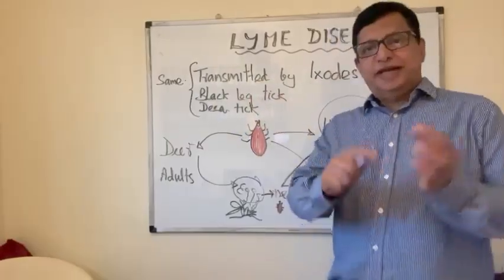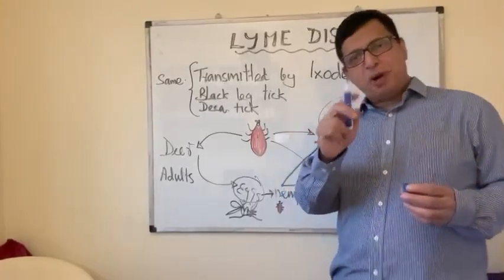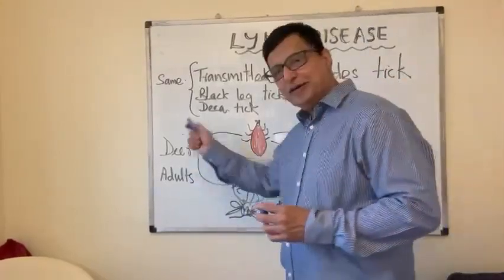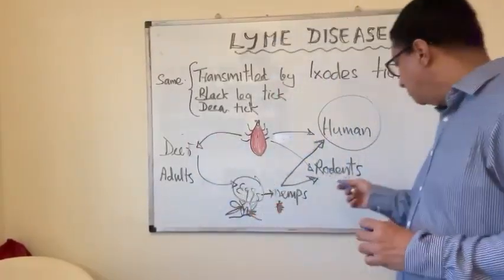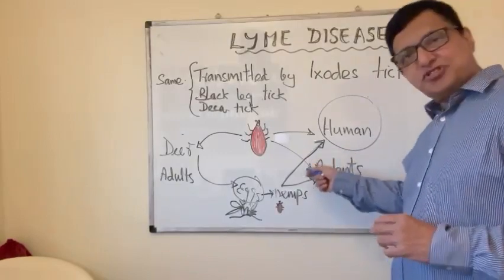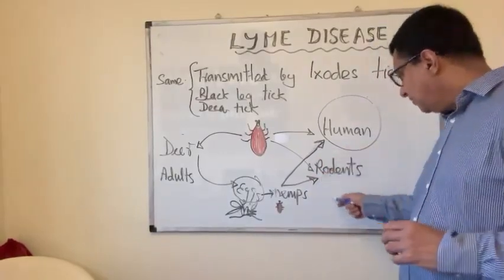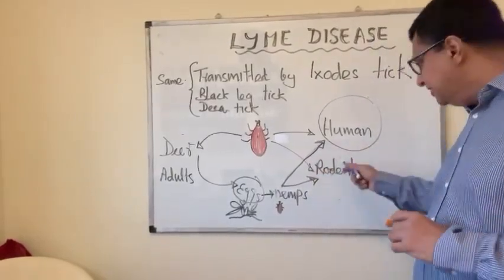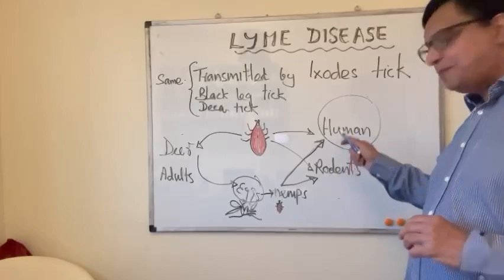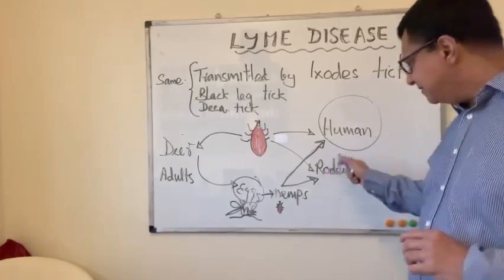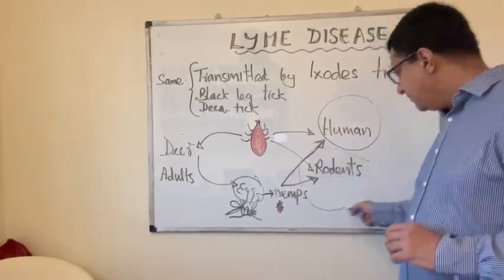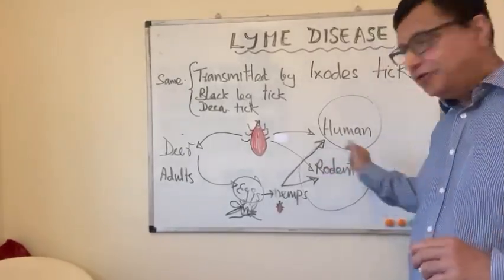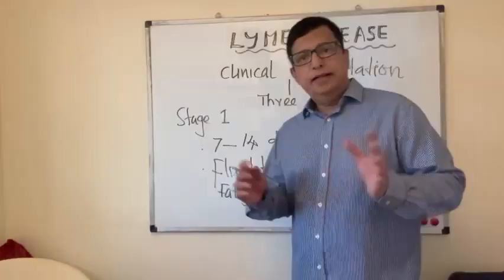The environmental host of these spirochetes is not the deer but the rodents, because spirochetes live in these rodents and they are the reservoir in the environment — not the deer.